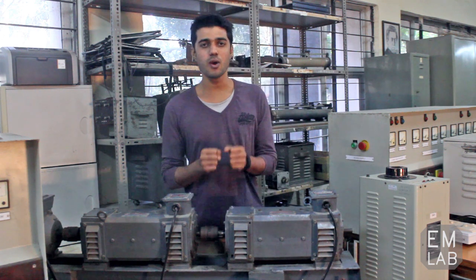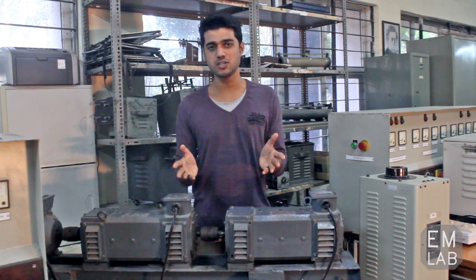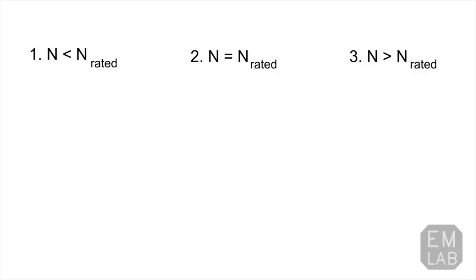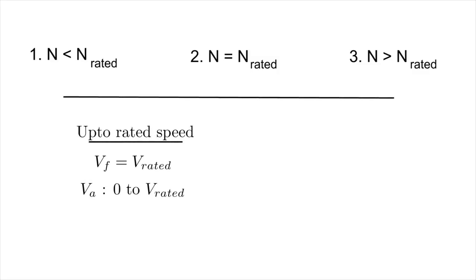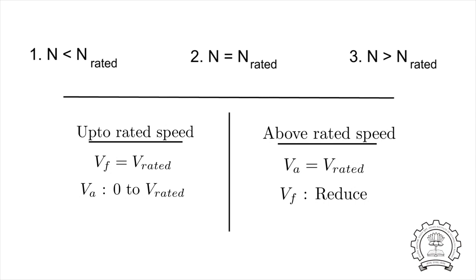In this experiment, we will be operating this DC motor at three different speeds: below rated speed, at rated speed, and above rated speed. Up to the rated speed, we will keep the field voltage constant and we will vary the armature voltage from zero to the rated value. And for above rated operation, we will keep the armature voltage constant and we will reduce the field voltage.